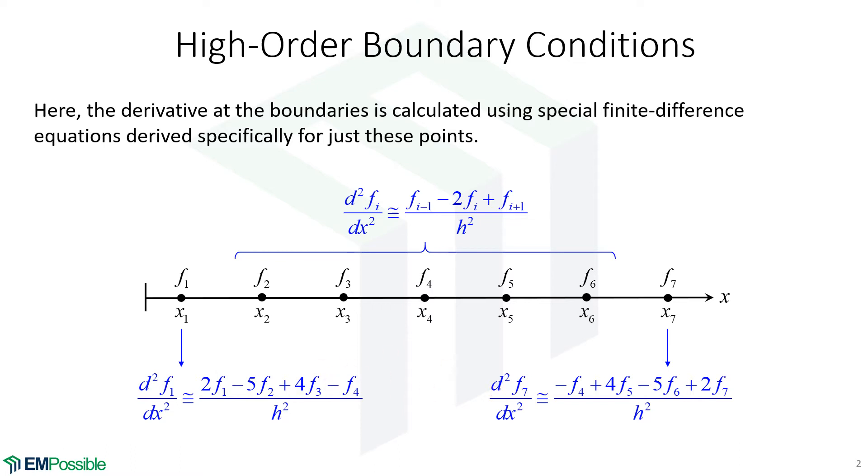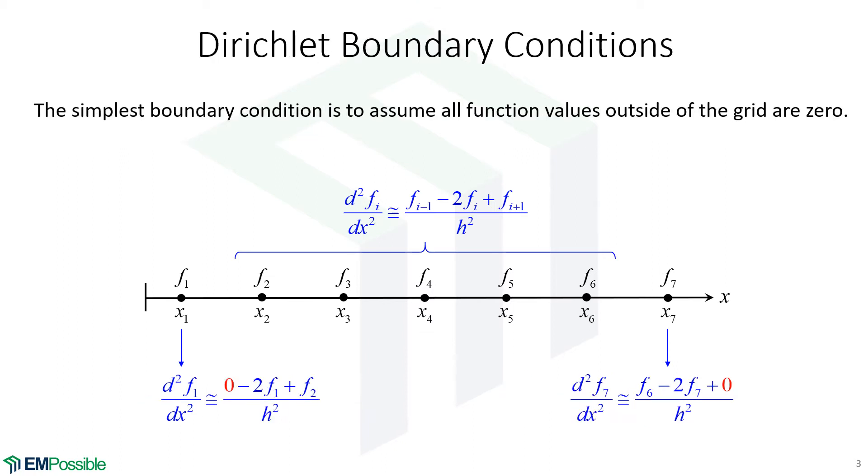So that's the higher order boundary condition. What other options are there? We have Dirichlet boundary conditions. This is where we assume the function value from outside of the grid is zero. And this is pretty simple because we can use our standard finite difference. But just when we need a value from outside of the grid, we set it to zero. So still, in a way, these edge points get their own special finite difference. It's kind of the one we're using for all the other points, but with a term set to zero. So we still have to treat them separately.